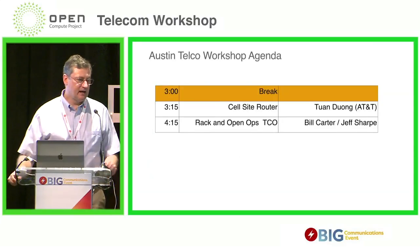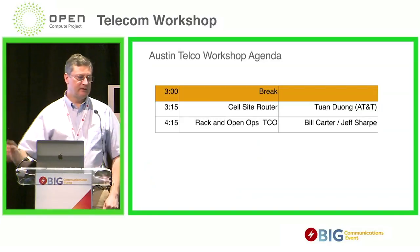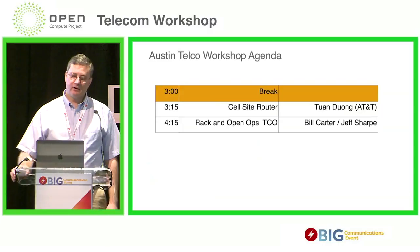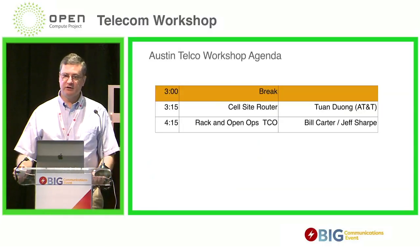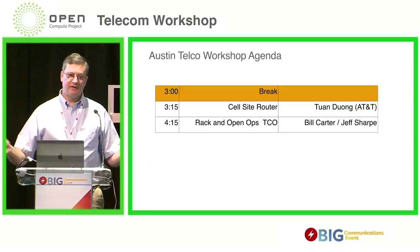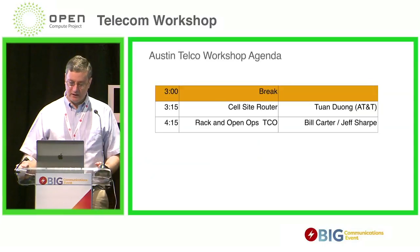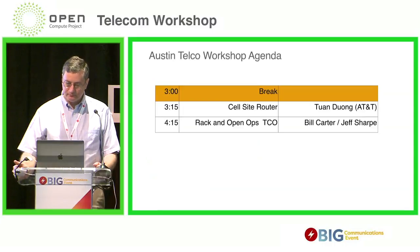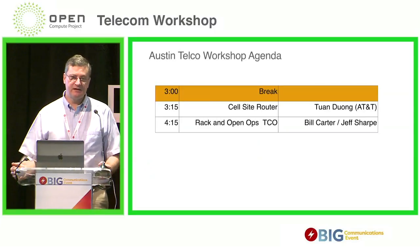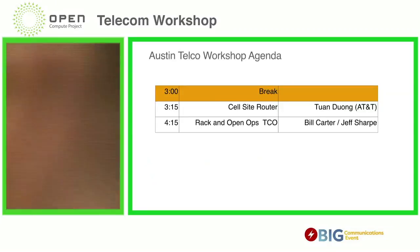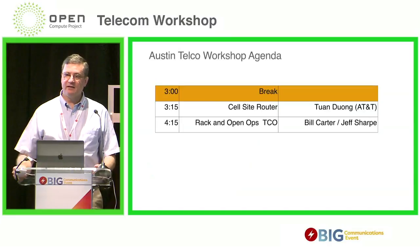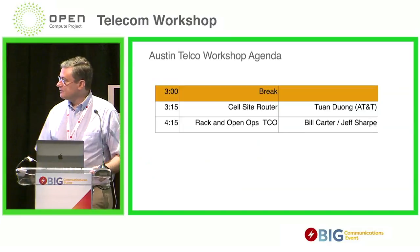The feedback we got from previous meetings was you don't want to just see presentations all afternoon - you want real conversations and a real workshop. After the GFAS, we'll have a short break, then round out the day with the cell site router initiative. Then Bill Carter and Jeff Sharp will come up to talk about RAC and open ops - the TCO equations for carriers using OCP equipment. Dirk will come up next to talk about upcoming OCP events, and then we'll do a round robin where everybody introduces themselves.